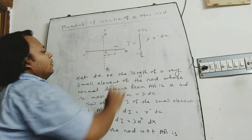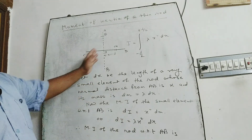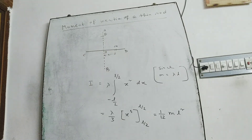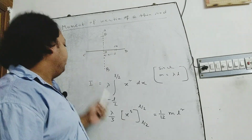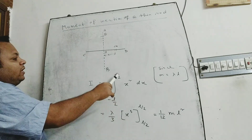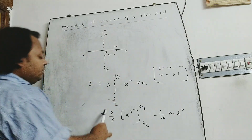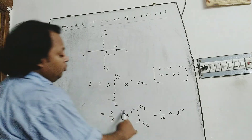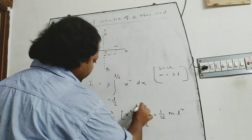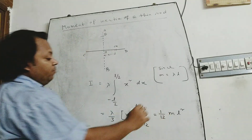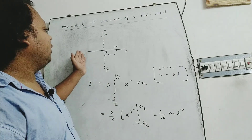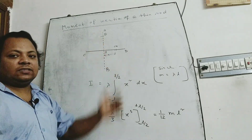This is the moment of inertia of the whole rod with respect to axis AB. Therefore, I is equal to lambda times the integration from minus L by 2 to plus L by 2 of x squared dx. This equals lambda by 3 times x cubed, evaluated from minus L by 2 to plus L by 2. This is the moment of inertia of the rod CD with respect to axis AB.